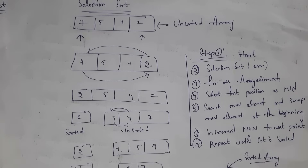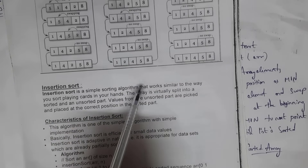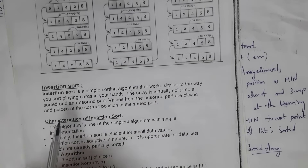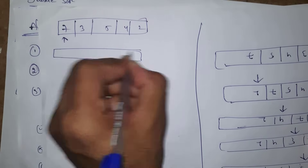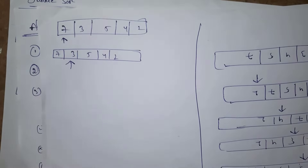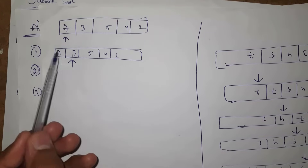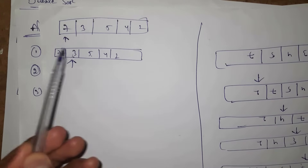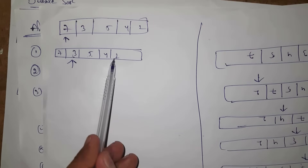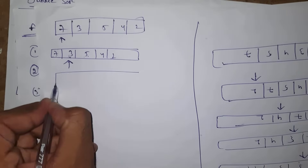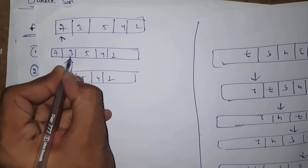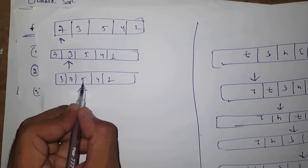Note that both selection sort and bubble sort are not suitable for large datasets — they are suitable only for small datasets. Next I will explain insertion sort. Insertion sort is a simple sorting algorithm that works similarly to the way you sort playing cards in your hands. For the unsorted array: seven, three, five, four, two — place cursor at first position, then move to next. Three is compared with seven, five is compared with three and seven, four with five, three, seven, and two with all remaining elements.